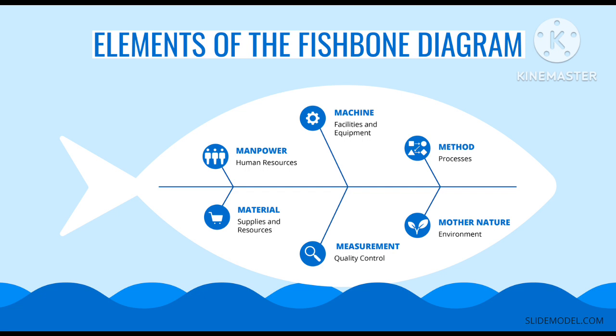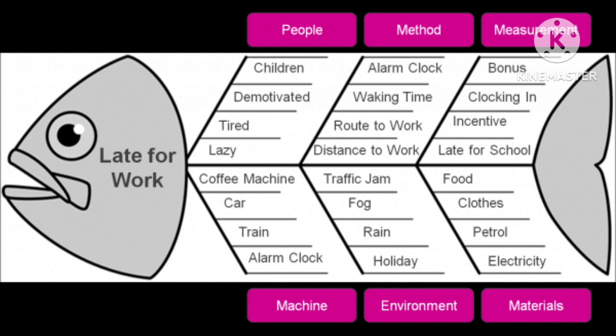It is also known as an Ishikawa diagram, which was created by Dr. Kaoru Ishikawa, an influential quality management innovator. The graph organizes a list of potential causes into categories. The cause and effect diagram shown here has six branches: manpower, machine, method, material, measurement, and mother nature.